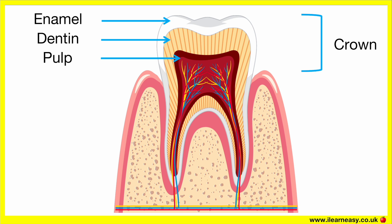Pulp. The pulp is the soft tissue inside the tooth that contains nerves, blood vessels, and connective tissue. The pulp nourishes the tooth and provides sensory functions. It also helps with the tooth's growth and development. The dentin encases the pulp, protecting it along with the outer enamel.